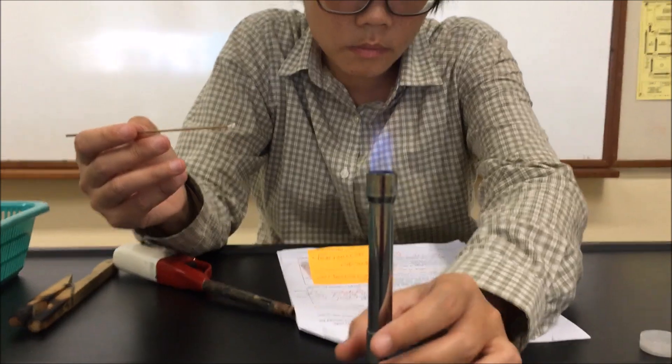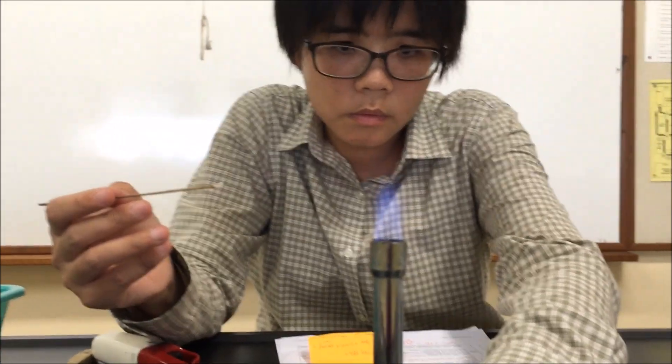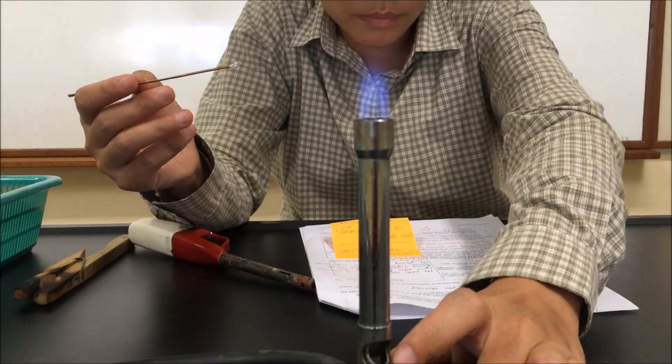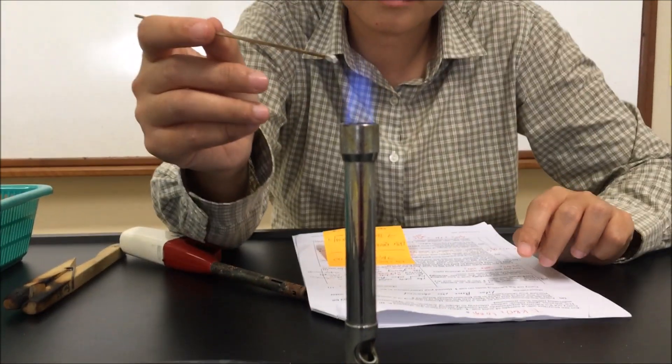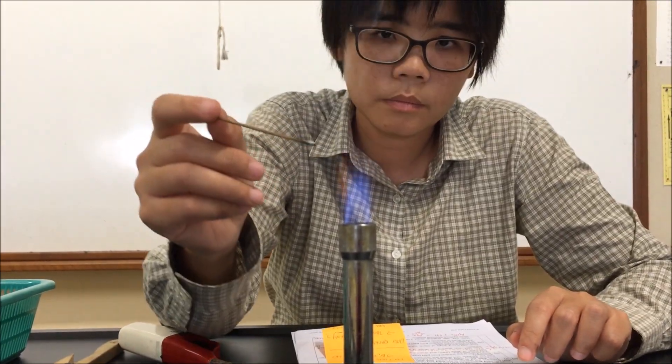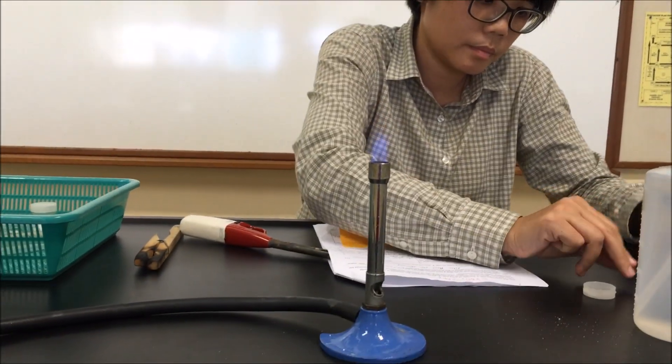Then to do the flame test, you need to turn to a non-luminous flame. Open airhole completely. Then put the splint at the tip of the triangle, at the tip of the small blue triangle.